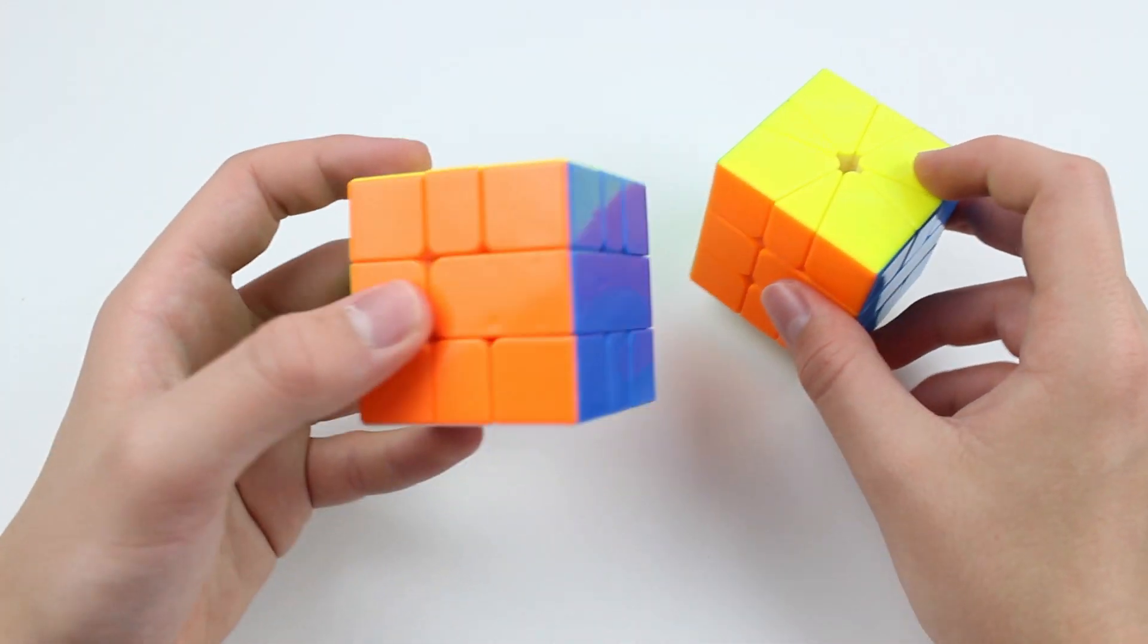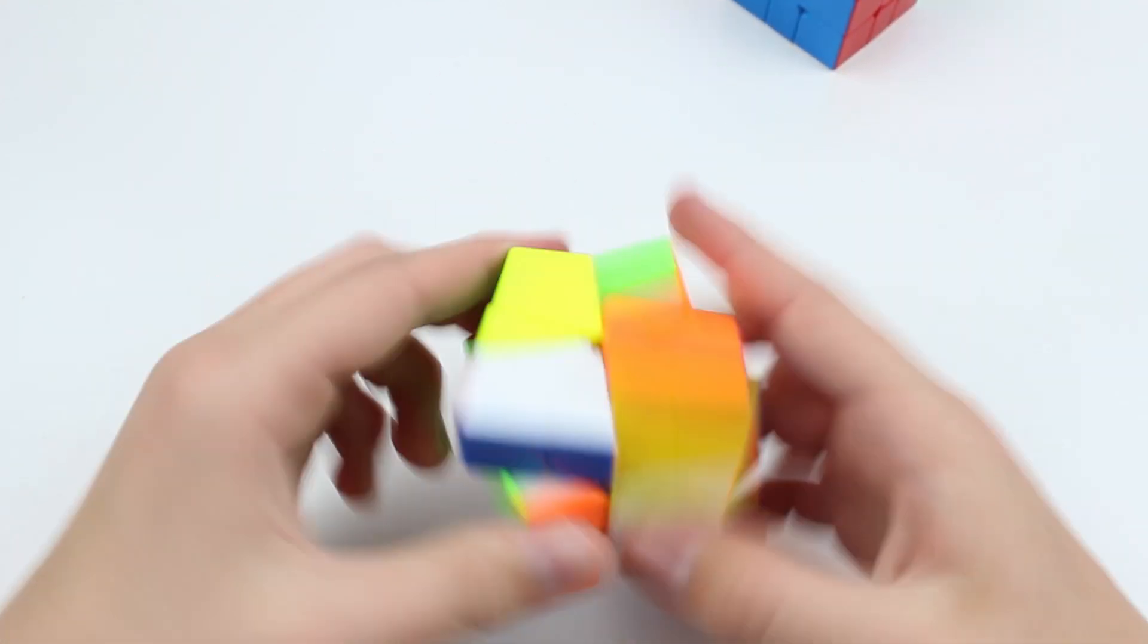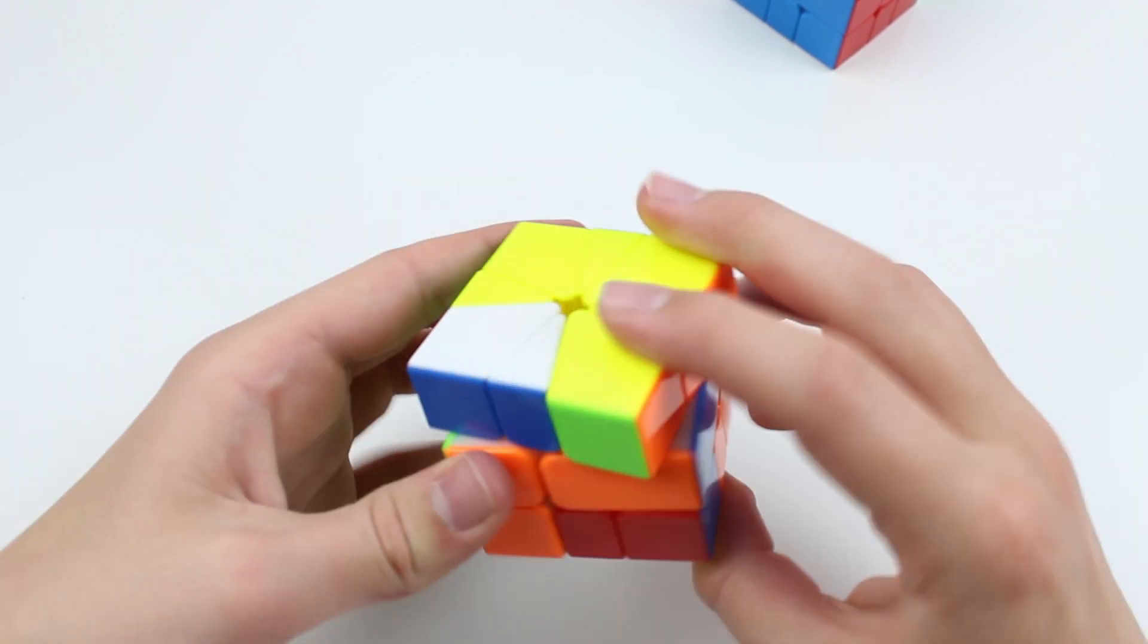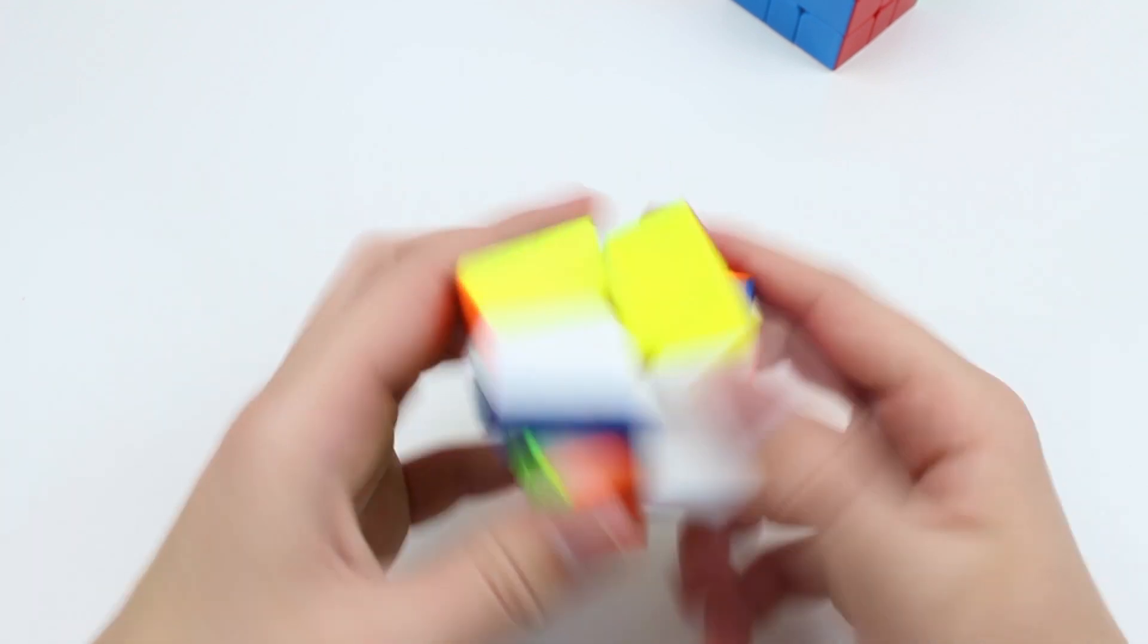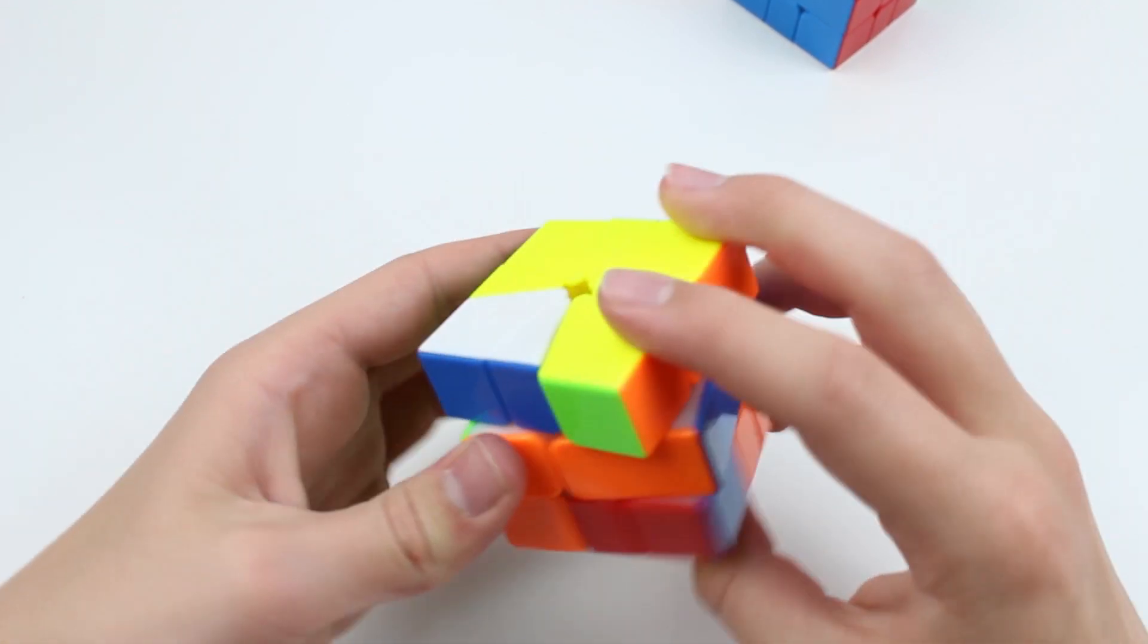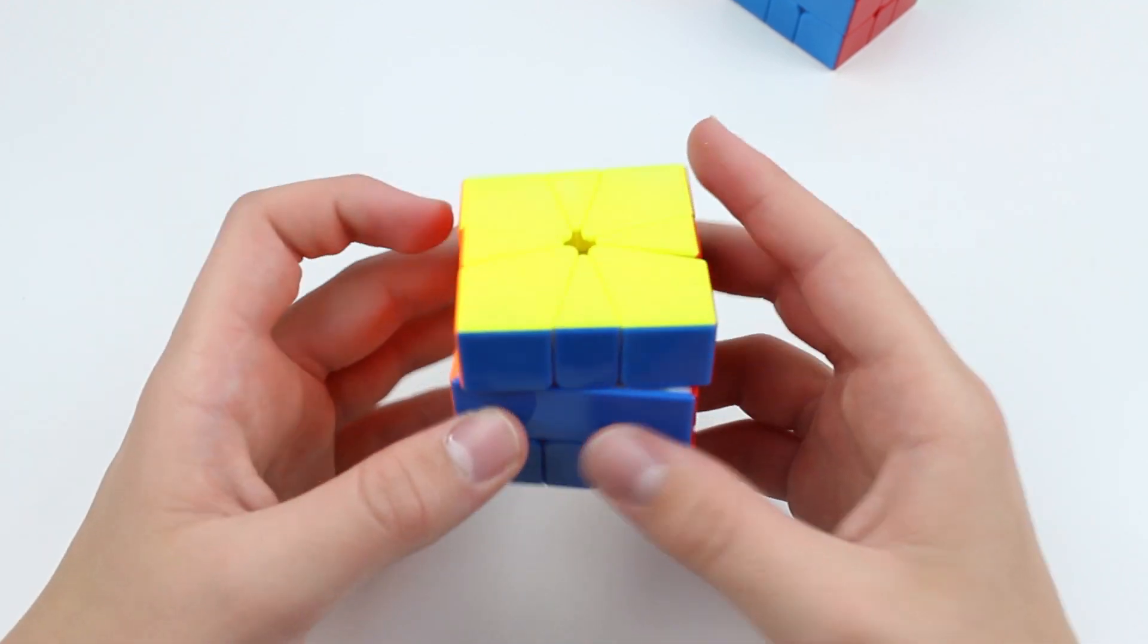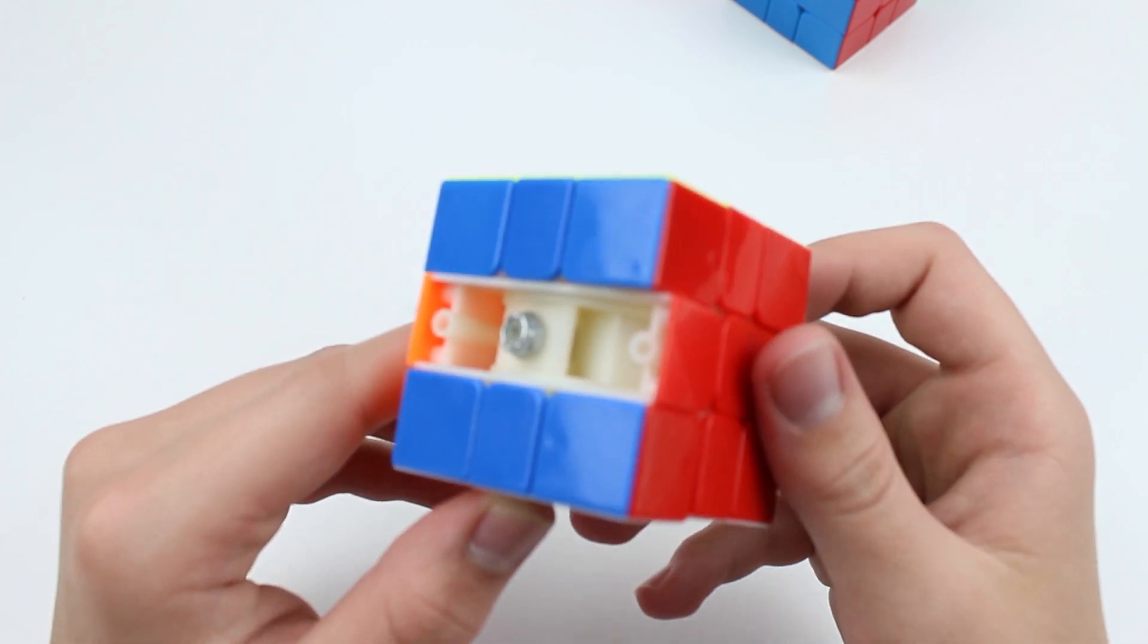The Volt is well known to be a very flexible square one and very customizable in terms of how you set it up. You can get a very different experience just depending on how you lube it and how well you tension it. The core can have some issues with stripping as well, which it is known for, so I've put a locknut on the core so that can't happen.